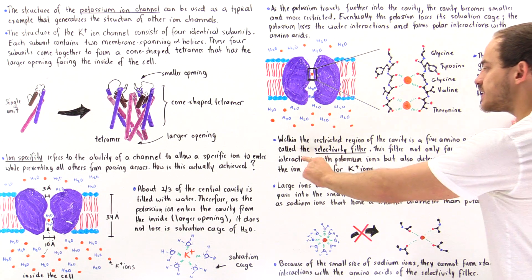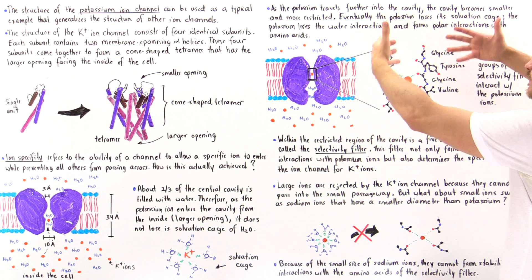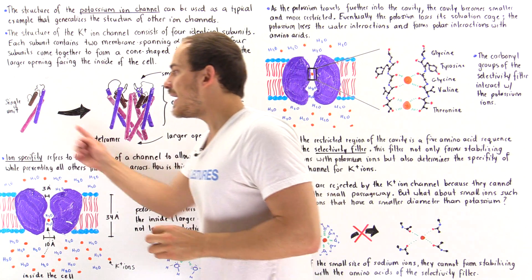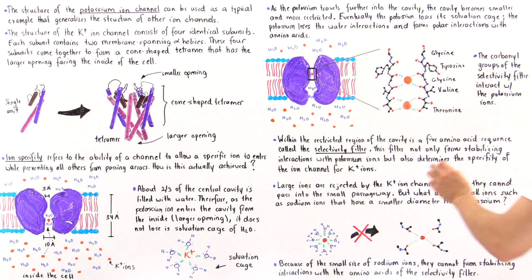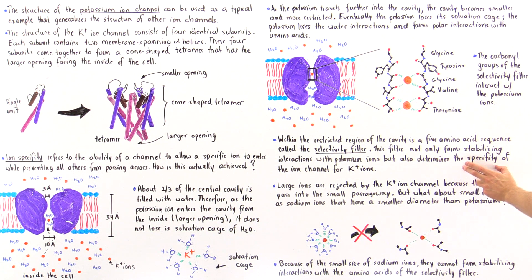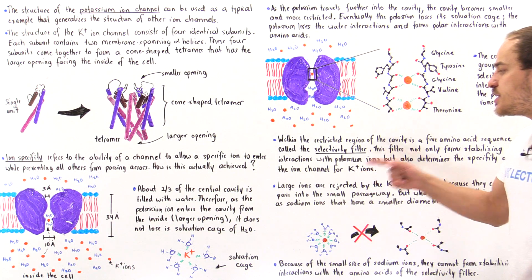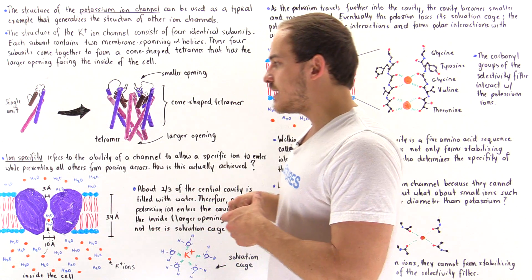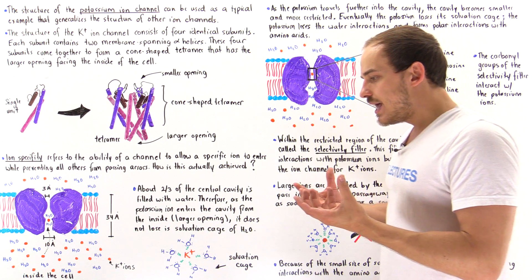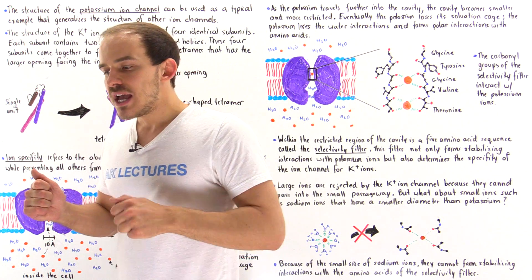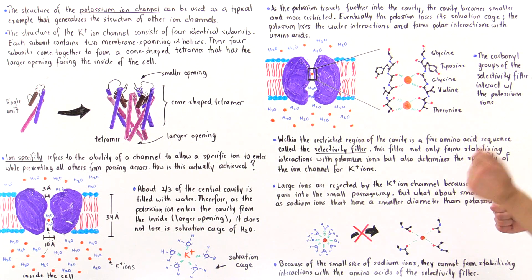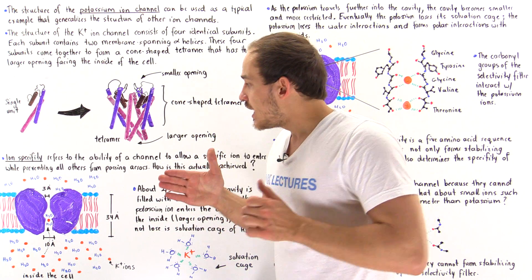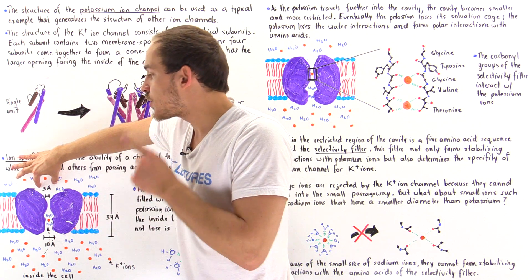The second function of the selectivity filter is to give the channel its ion specificity — determining which specific ions can move across that membrane. For ions with a greater radius than potassium, the answer is straightforward: they are simply too large to physically pass through the 3 angstrom width of this restricted region.